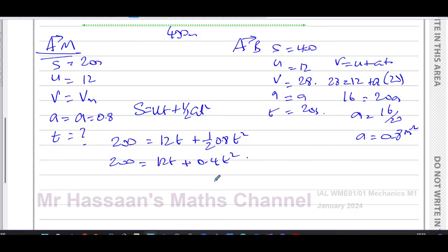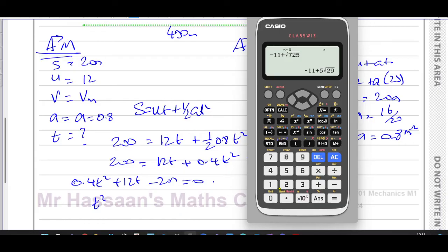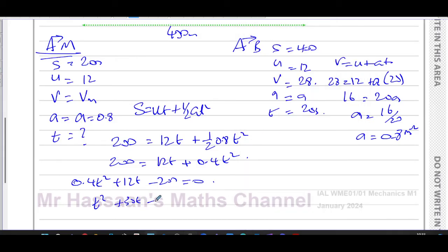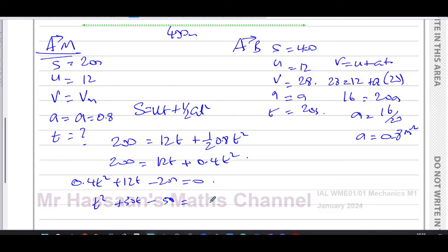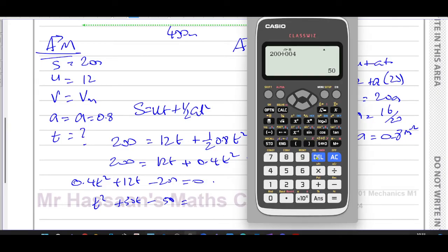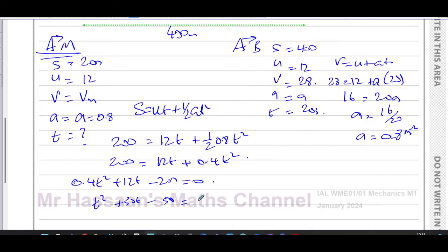So we want to solve this. Let's rewrite this as a proper quadratic: we have 0.4T squared plus 12T minus 200 equals 0. If we divide everything by 0.4, that will be T squared, and 12 divided by 0.4 is going to give you 30, so T squared plus 30T minus, and 200 divided by 0.4 gives you 500.